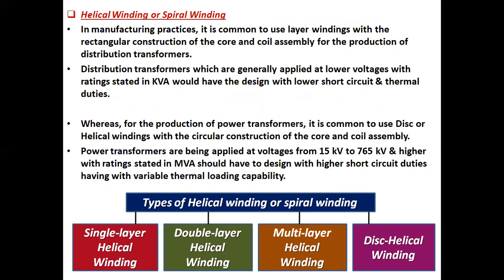Helical winding or spiral winding: in manufacturing practices, layer windings with rectangular construction of core and coil assembly are commonly used for distribution transformers, which are applied at lower voltages with kVA ratings and are designed with lower short circuit and thermal duties. For power transformers, disc or helical windings with circular construction of the core and coil assembly are common. Power transformers are applied at voltages from 15 kV to 765 kV and higher, with ratings in MVA, and are designed with higher short circuit duties and variable thermal loading capacity.